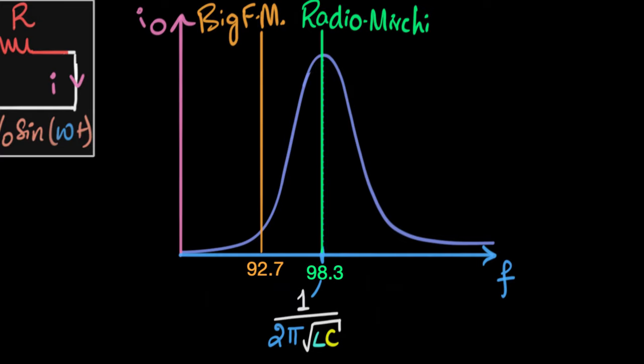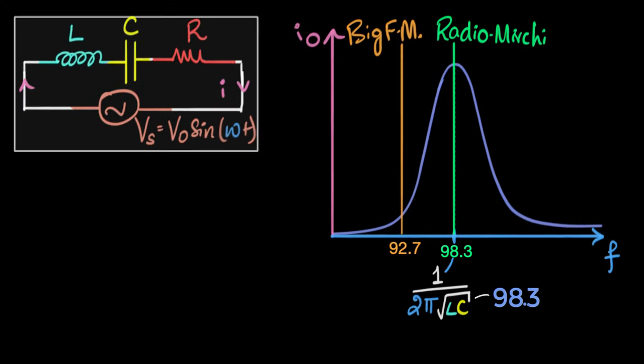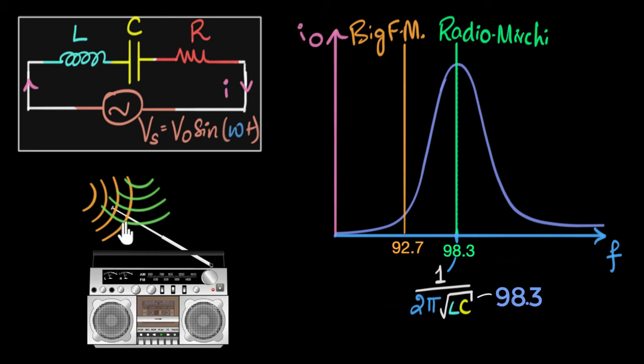Now let's imagine that in our radio currently, the LC values are such that if you calculate the resonant frequency, it happens to be exactly 98.3 megahertz. Here's our radio, and here are both the radio waves. They're both hitting our antenna, and as a result, the antenna vibrates with both frequencies. An antenna converts radio signals into electrical signals, so the antenna is trying to drive our LCR circuit at both these frequencies.